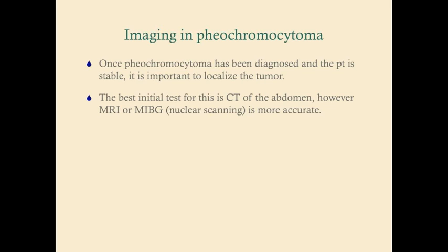If plasma and urinary metanephrines are both positive but CT can't locate the pheochromocytoma, use nuclear scanning — it's more sensitive and can find tumors that are too small or located outside the adrenals, since 10% are extra-adrenal. Only go for nuclear scanning if you can't find the pheochromocytoma on CT or MRI, as nuclear scanning is expensive and inconvenient.